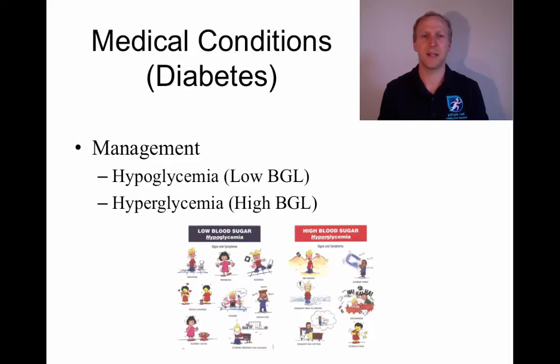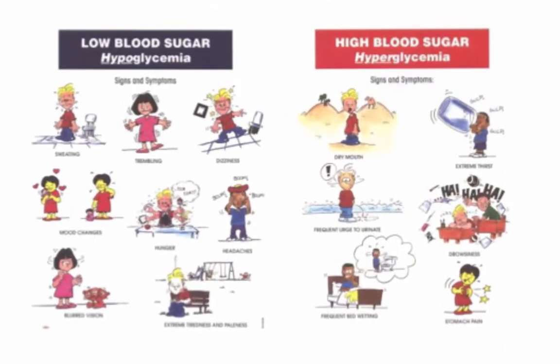Two scenarios can arise for a diabetic: hyperglycemia (high blood glucose) and hypoglycemia (low blood glucose). Someone with low blood glucose will feel really tired and lethargic, anxious, may sweat, have a rapid heart rate, feel dizzy, or even lose consciousness. To treat hypoglycemia, give them some form of sugar to raise blood glucose levels — cordial, juice, or jelly beans, which people with diabetes often carry for emergencies.